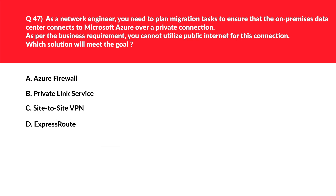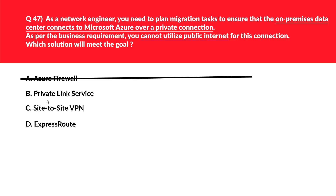We have an interesting question related to migration. Let's first look at option A, Azure Firewall. Firewall is meant to protect against malicious activities like cross-site scripting, and cannot be used to connect an on-premises data center to Azure cloud as required here. Therefore A is definitely incorrect. Option B is Private Link Service. Private Link allows customers on networks to connect to other Azure services over a private connection, but it has nothing to do with connecting on-premises and cloud during migration. Again an incorrect choice.